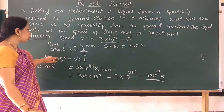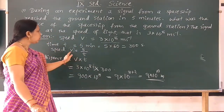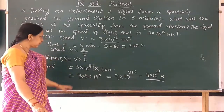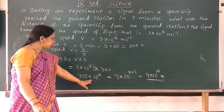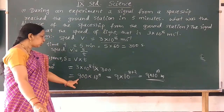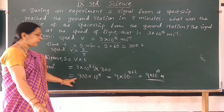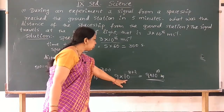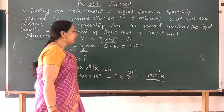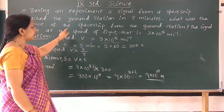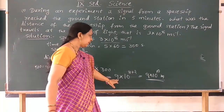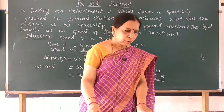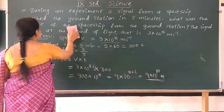Did you understand how to solve? Distance S is equal to speed V into time T. Speed is 3 × 10⁸ into time 300 seconds, that is 900 × 10⁸. Converting 900 as 9 × 10², we get 9 × 10¹⁰. So the distance of the spaceship from the ground station is 9 × 10¹⁰ meters.